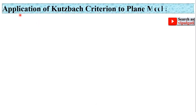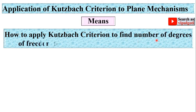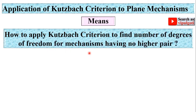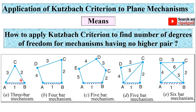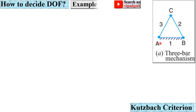Now let us look at the application of the Kutzbach criterion to plane mechanisms — how to apply it to find the number of degrees of freedom for mechanisms having no higher pair. We will find the degrees of freedom for five cases one by one. Let us start from the first figure.